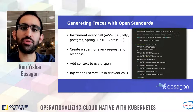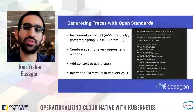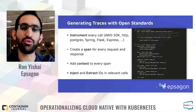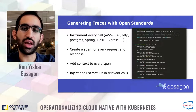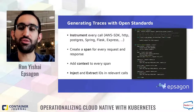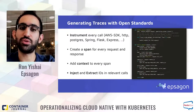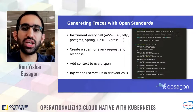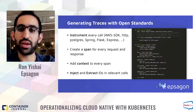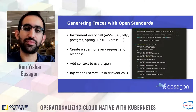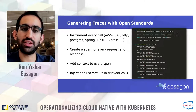In distributed tracing, you would typically instrument every external API call within your code — this is how you create the building blocks of traces, called spans. You should collect and include in your spans all the relevant information from these API calls, including the payload, so you will have all the information you need when troubleshooting an error. By injecting and extracting identifiers into the span context and API calls, you can then correlate the spans coming from remote services.